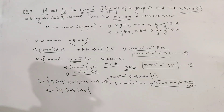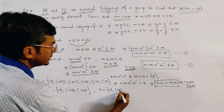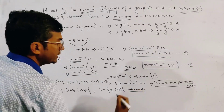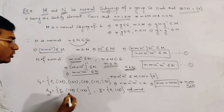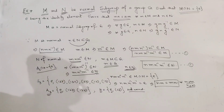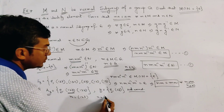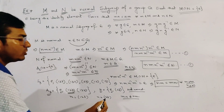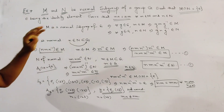We consider another subgroup H = {e, (2 3)}, which is a subgroup but not a normal subgroup. The common element of A3 and H is only the identity, so A3 intersection H equals {e}. But if we take m = (1 2 3) from A3 and n = (2 3) from H, then mn is not equal to nm. This is because H is not a normal subgroup — this is a very important note against this theorem.